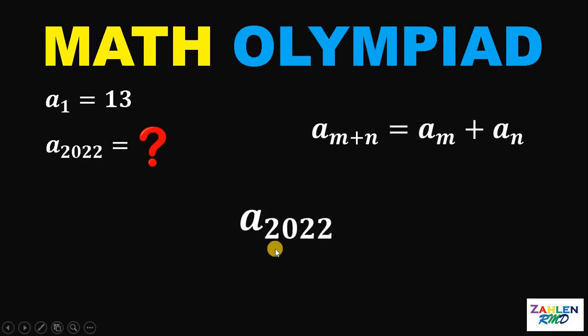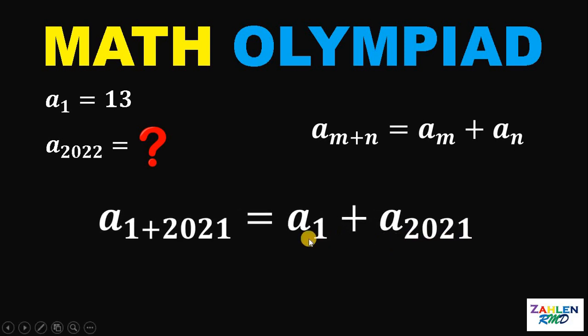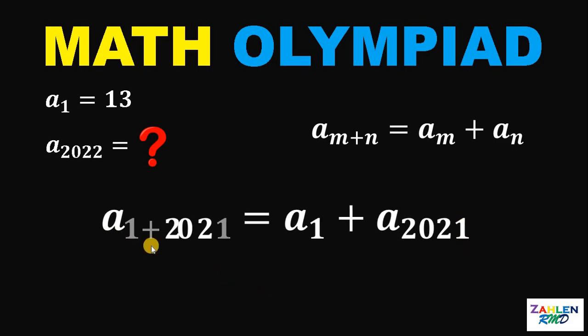Take note that 2022 can be written as 1 plus 2021. Now, let's apply this property. So a sub 1 plus 2021 can be written or equivalent to a sub 1 plus a sub 2021. Let's simplify. The left-hand side is just a sub 2022.